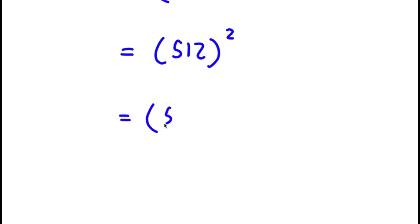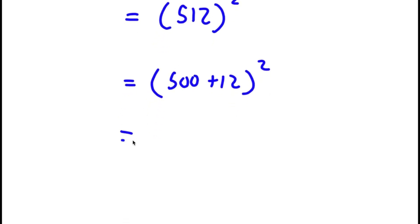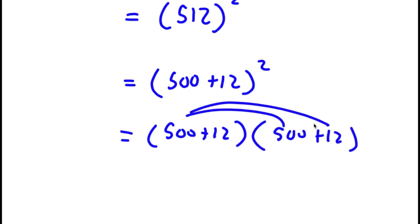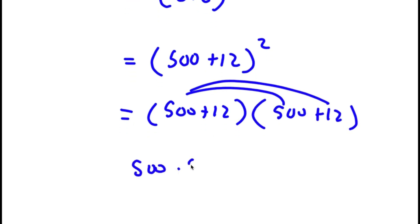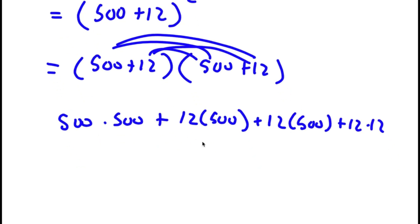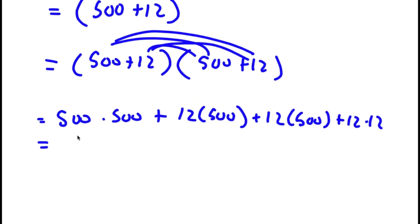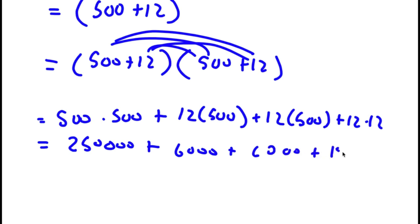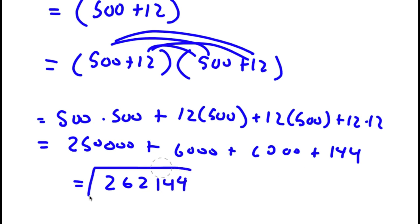Now, 2 to the power of 9 is equal to 512, so I have 512 to the power of 2. I'll rewrite 512 as 500 plus 12, all to the power of 2, which is the same as 500 plus 12 times 500 plus 12. Distributing: 500 times 500 is 250,000, plus 12 times 500 is 6,000, plus another 6,000, plus 12 times 12 is 144. So 6,000 plus 6,000 is 12,000, and 12,000 plus 250,000 is 262,000, plus 144. So my answer is 262,144.